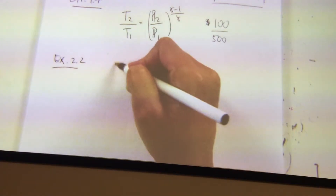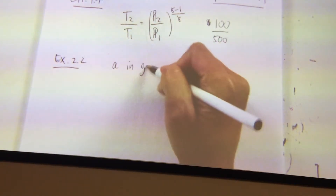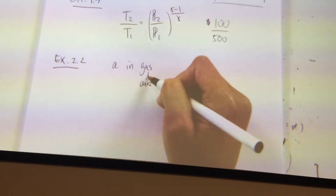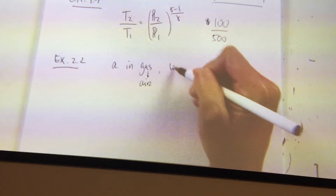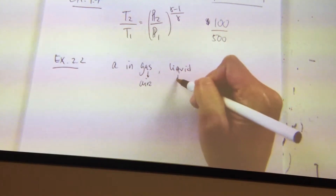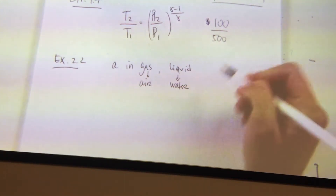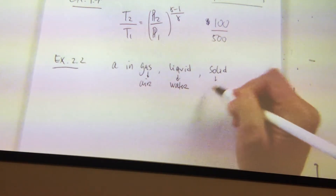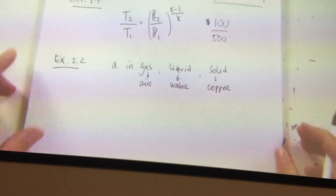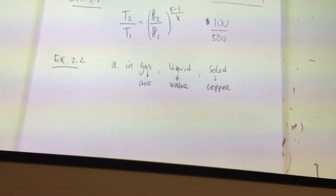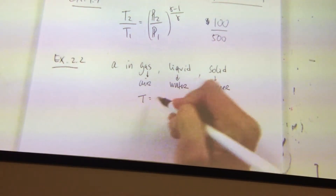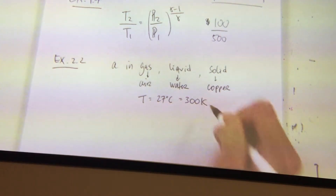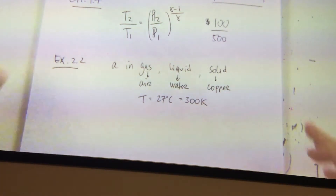So what we want to look for is a gas — in this case the gas is going to be air. Then we also want to find a liquid; the liquid we're going to use is water. And a solid — in this case it's going to be a metal; we're going to use copper. We want to find the speed of sound in all of them at a temperature of 27 degrees Celsius, or 300 Kelvin, and compare how it differentiates.